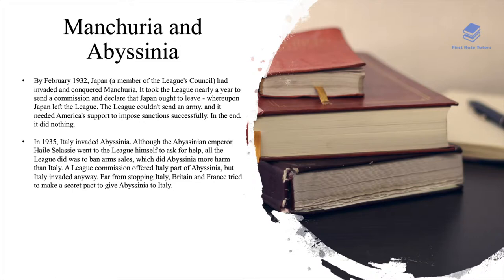In 1935 there was the Abyssinian Crisis, where Italy essentially invaded Abyssinia — modern-day Ethiopia. Although the Abyssinian Emperor Haile Selassie went to the League himself to ask for help, all the League did was ban arms sales, which did Abyssinia more harm than Italy. A League commission offered Italy part of Abyssinia, but Italy invaded anyway, and far from stopping Italy, Britain and France tried to make a secret pact to give two-thirds of Abyssinia over to Italy.